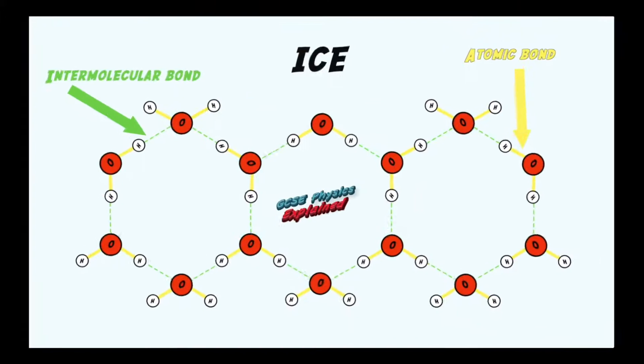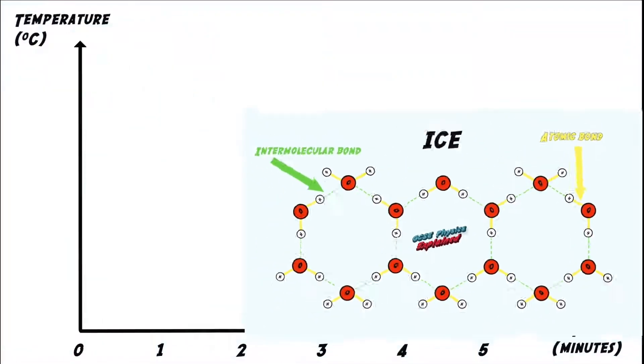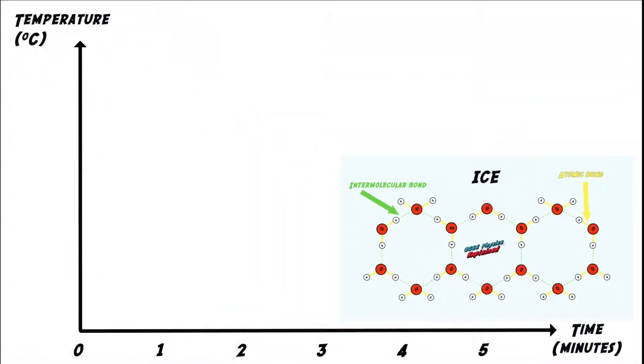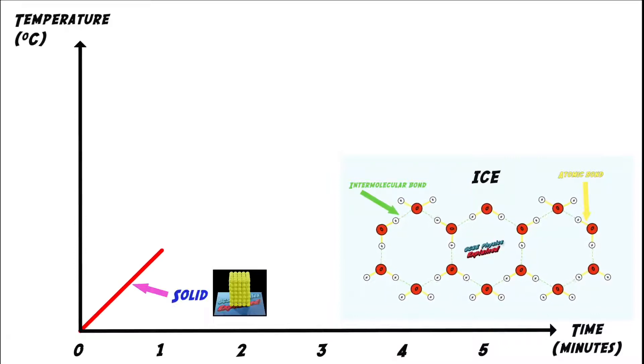If we take a solid substance and heat it, we can plot a graph of temperature against time. The graph starts off as you might expect with the temperature of the solid increasing at a steady rate.